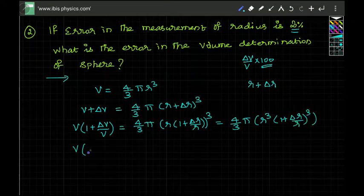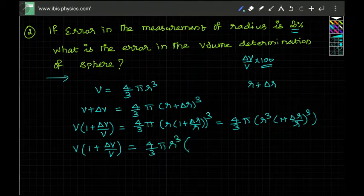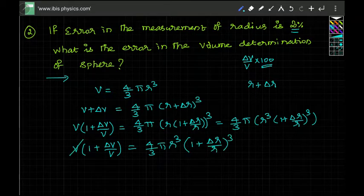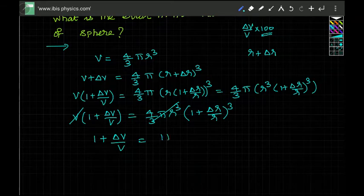So v times (one plus delta v by v) equals four by three pi r cube into (one plus delta r by r) whole cube. Since volume is four by three pi r cube, these two terms cancel, giving us: one plus delta v by v equals (one plus delta r by r) whole power three.